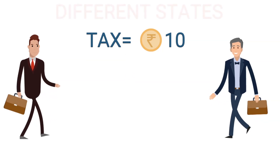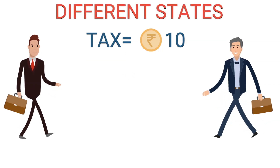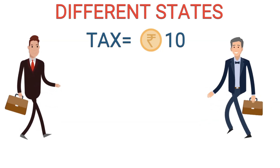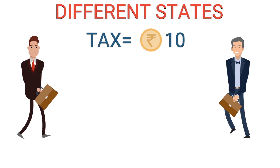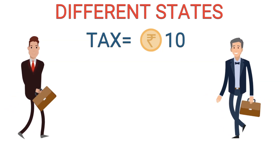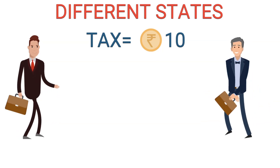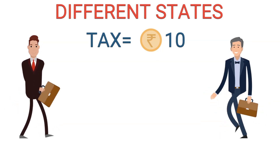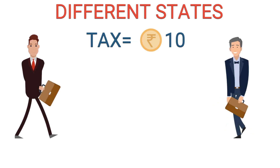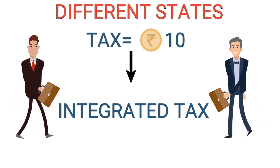But if A is from Karnataka and B is from Gujarat, for example, then B will still pay Rs.10 as the tax. But because they are both from different states, the full Rs.10 goes to the Central Government. And then it will be decided which state gets how much of that tax. So this tax is called the Integrated Tax, i.e. IGST.